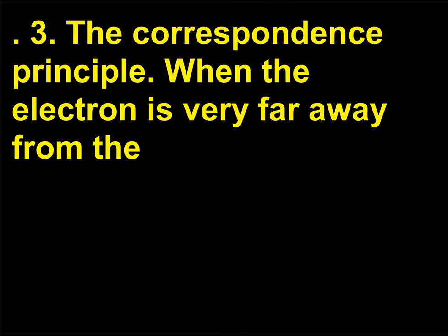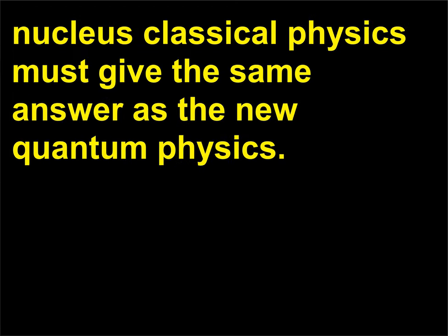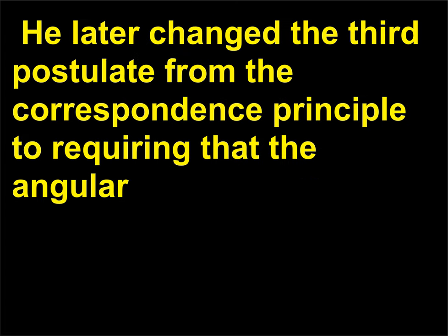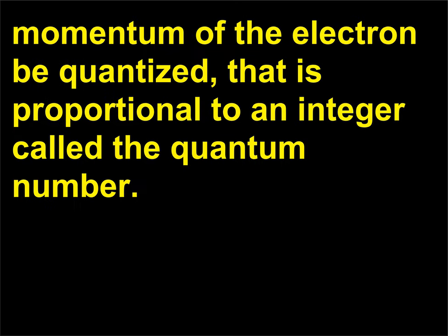Postulate 3: The correspondence principle — when the electron is very far away from the nucleus, classical physics must give the same answer as the new quantum physics. He later changed this postulate to requiring that the angular momentum of the electron be quantized, proportional to an integer called the quantum number.